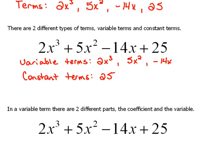Now, for every variable term, there are two different parts. So let's look at our first variable term here, the 2x³. The number in front of the variable is called the coefficient. And the variable itself, or the letter itself, is the variable part of that term. So every one of those is made up of a coefficient, the number, and a variable, which is the letter.